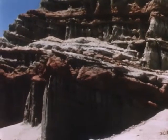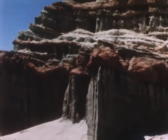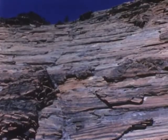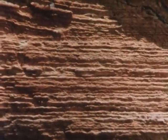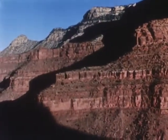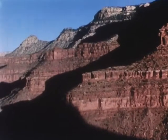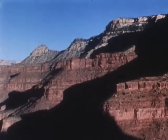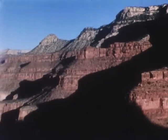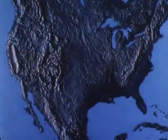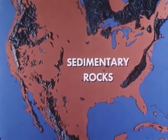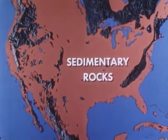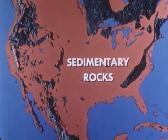Rocks made from sediments are common and they are always layered. They have been formed from loose sediments which have been pressed and cemented together over long periods of time to form hard sedimentary rocks. In this part of North America, sedimentary rocks make up over 70 percent of the land. Was all of this rock made from bits and pieces of decomposed rock, or was some of it formed from other kinds of sediments?